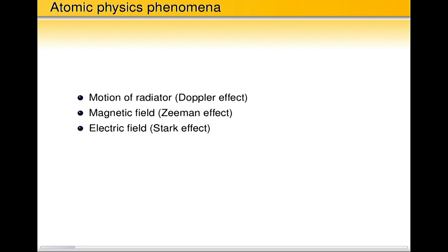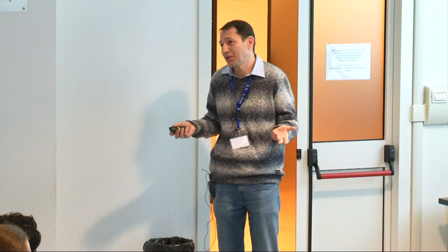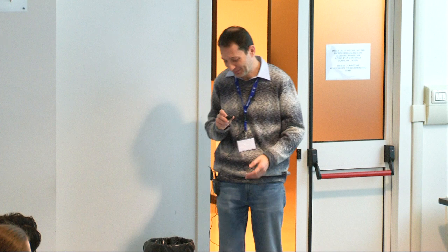In plasma there are several phenomena that affect line radiation. These are the motion of the radiator, which is the Doppler effect; the magnetic field, which gives rise to the Zeeman effect, the Zeeman splitting; and finally the electric field, which is the reason for the Stark effect. One can also mention natural broadening and other types of natural decays, not only radiative. But in principle, all of this is due to interaction with magnetic or electric fields. So basically it's just those three.